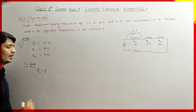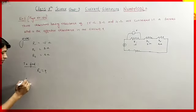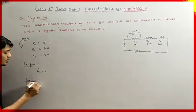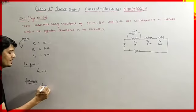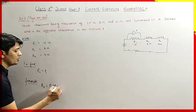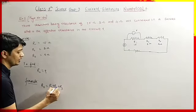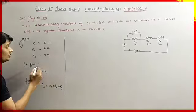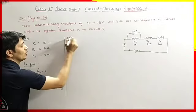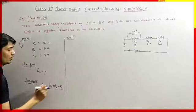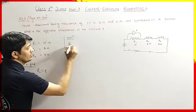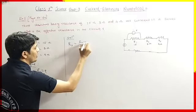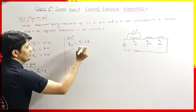The formula for effective resistance when resistors are connected in series is: RS = R1 + R2 + R3. We will use this formula to solve. The effective resistance in a circuit is equal to the sum of the individual resistors' resistance.